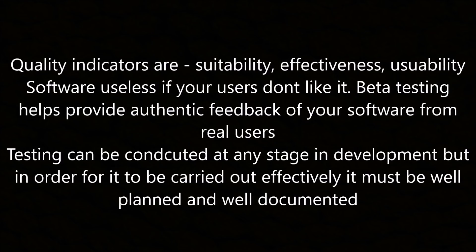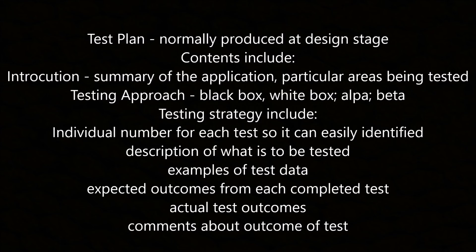Quality indicators including suitability and usability affect this, as the software is useless if users don't like it. Beta testing helps provide authentic feedback from real users. Testing can be conducted at any stage in development but must be well planned and documented. A test plan is normally produced at the design stage. The contents include an introduction summarising the application and particular areas being tested, the testing approach (black box, white box, alpha, or beta), the testing strategy including the number of each test, description of what is to be tested, examples of test data, the expected outcomes, the actual test outcomes, and comments about the outcome.